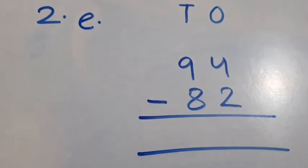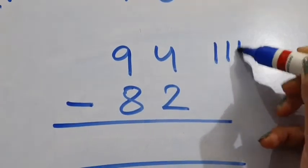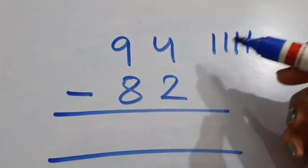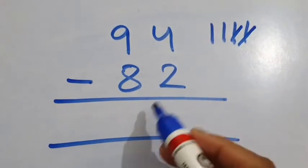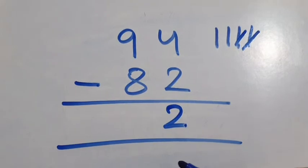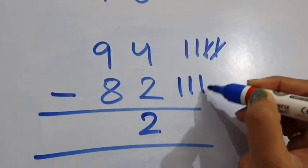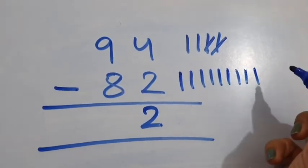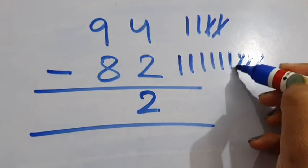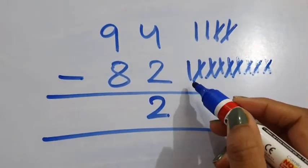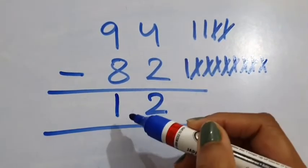2E: 94 minus 82. 1's column: 4 minus 2. Draw 4 lines and cut down only 2 lines, so 2 lines are left. We will write 2 in the 1's column. Now see the 10's column: 9 minus 8. Draw 9 lines and out of these 9 lines, remove 8 lines — only 1 line is left. So we will write 1. So 94 minus 82 is equal to 12.